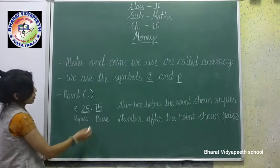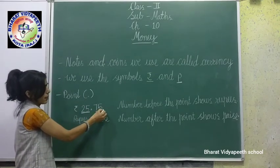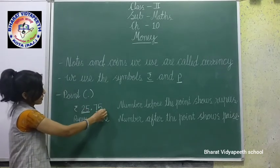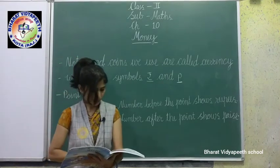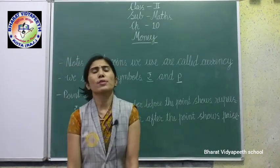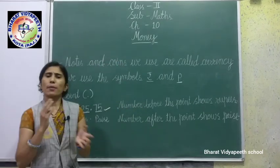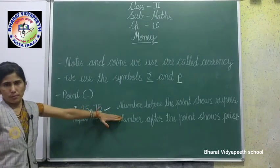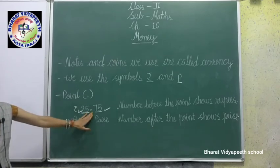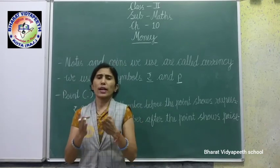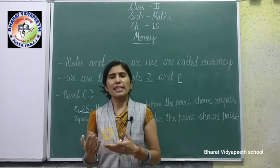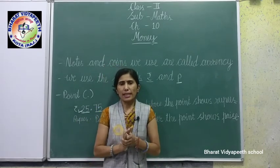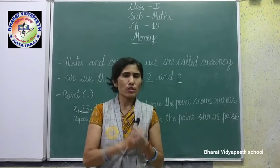The number after the point shows paise. This point separates rupees and paise. So, notes are made of paper and coins are made of metal. In India, currency is used in the form of rupees, and currency comes in two forms: notes and coins.